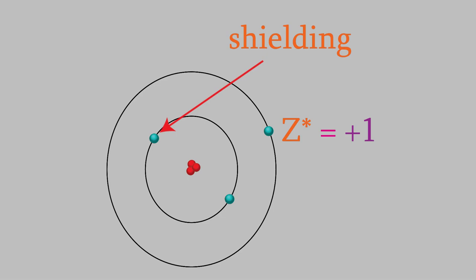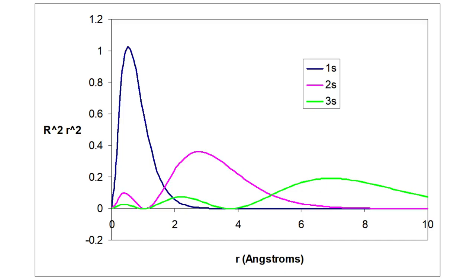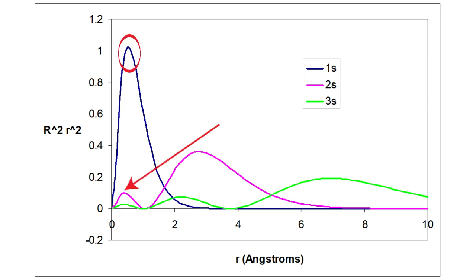As we saw in video 18, the probability of finding an electron at various distances from the nucleus is given by this plot. A 2s electron, seen here in pink, has a significant probability of actually being closer to the nucleus than a 1s electron. That's a very significant fact — it has a substantial impact on the effective nuclear charge seen by different types of electron. For example, it means that the effective nuclear charge seen by a 1s electron is actually lower than we might expect, because it's partially shielded by 2s electrons.